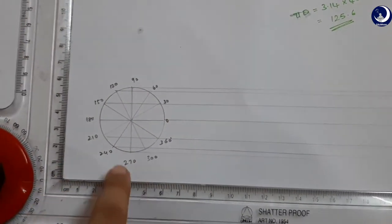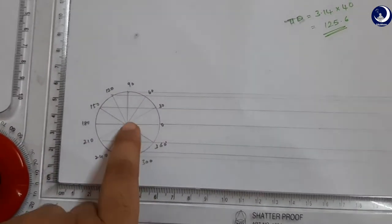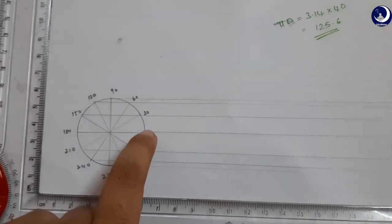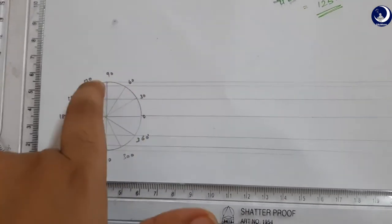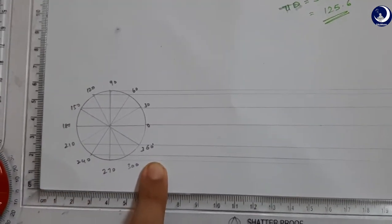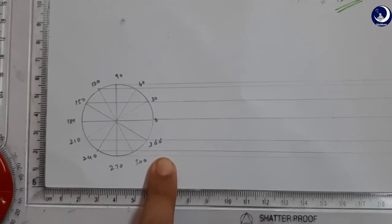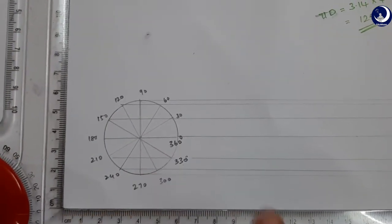So I extended the lines and I marked these points as the angles. Let us see, this is 0 degrees. So from here to here it's 30 degrees, from here to here it's 60 degrees, 90, 120, like that. So this full thing is 360. This is 330, this will be 360.